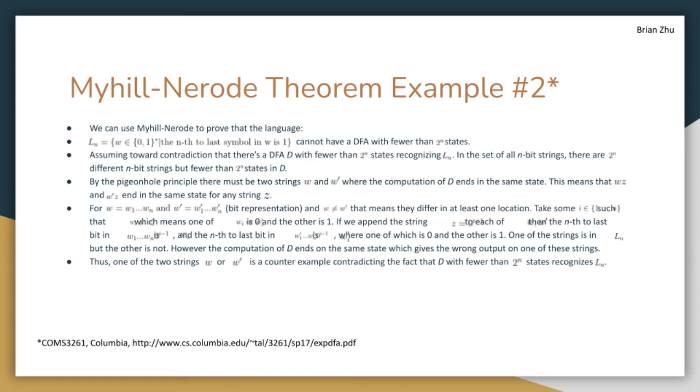Thus, one of the two strings W or W' is a counterexample contradicting the fact that the DFA D with fewer than 2^n states recognizes L. This concludes the proof of contradiction that L cannot have a DFA with fewer than 2^n states.